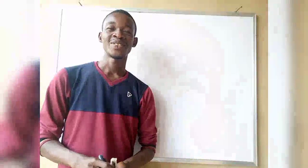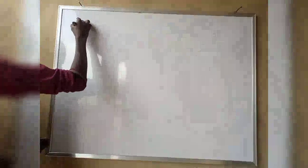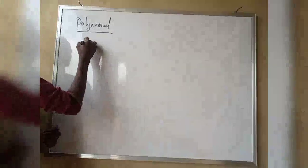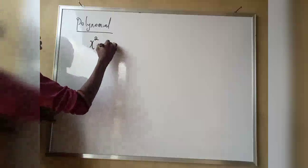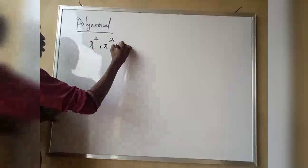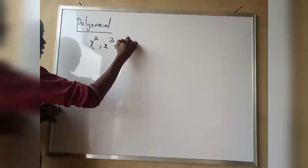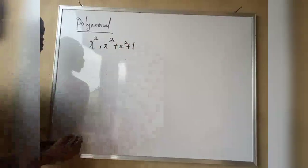Welcome to my YouTube channel. The topic for today is polynomial. Polynomial can simply be defined as an equation having an order or a power. For instance, when we are talking of order or a power, we are talking of something like x squared, or something like x cubed plus x squared plus 1.